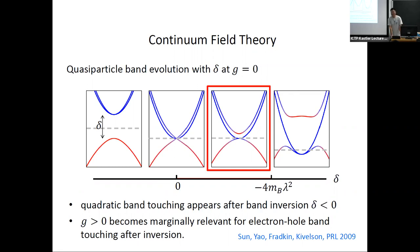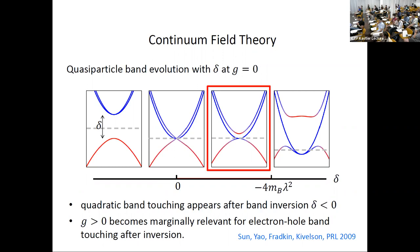A question about the density of states near the band touching: for the linear dispersing band the density of states goes like energy, and for the quadratic band touching it goes like a constant — you take the sum of the two.